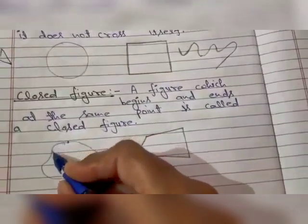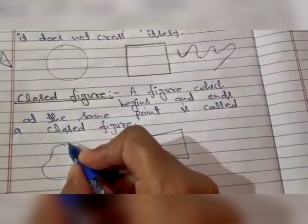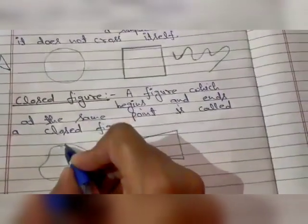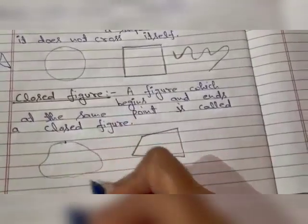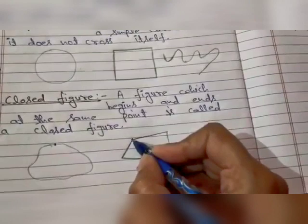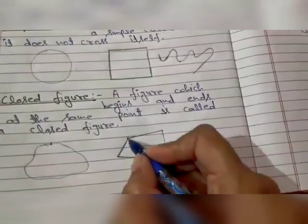If I start drawing this figure from here and end at the same point, the endpoint and starting point are the same, so this figure is called a closed figure. This is also a closed figure because I am starting from here and ending also here.